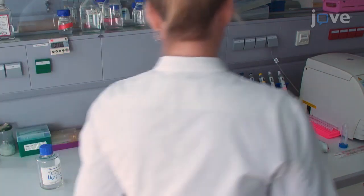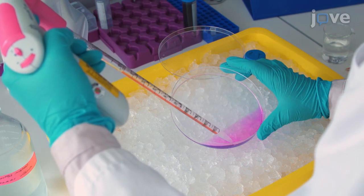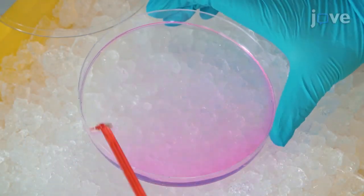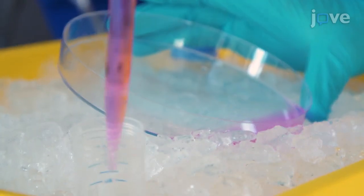To harvest the cells, place the cell dish on ice, add 10 mL of cold PBS to the cell suspension, and scrape the attached cells off the plate. Collect the cell suspension in a 50 mL tube.